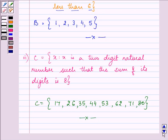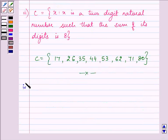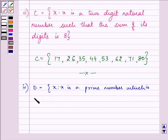The fourth part given to us is D = {x : x is prime number which is divisor of 60}. Now we need to think of two things over here. It has to be a prime number and it should be a divisor of 60.